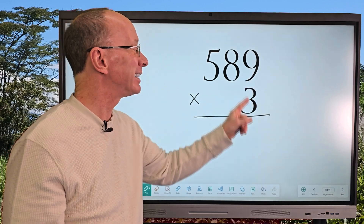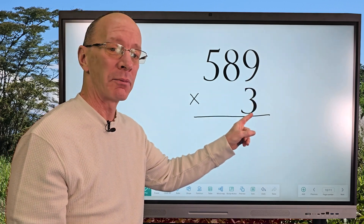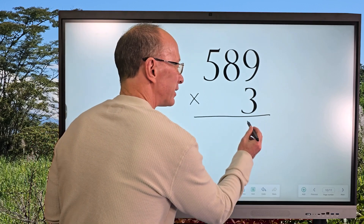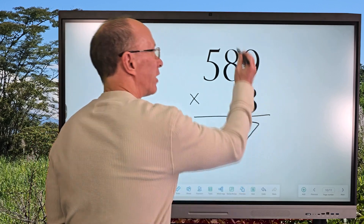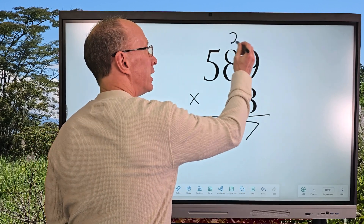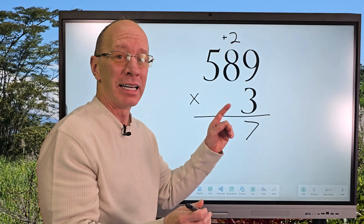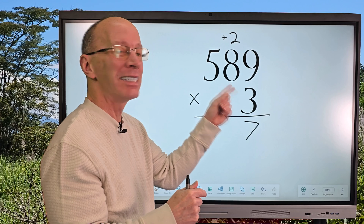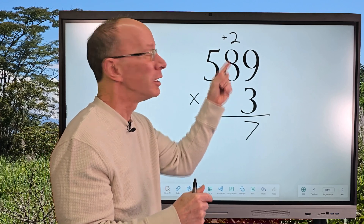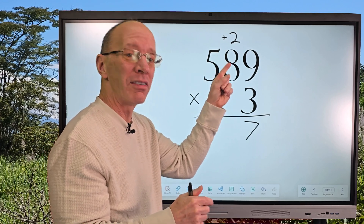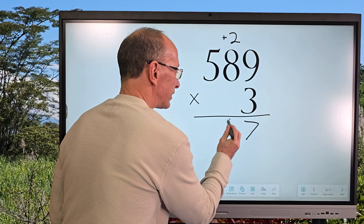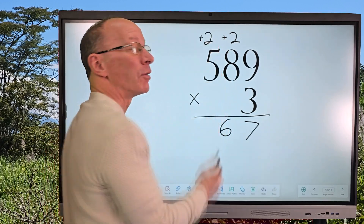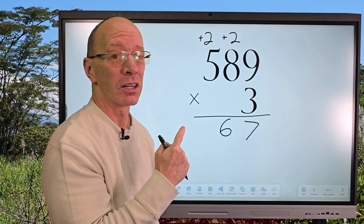Now nine times three — nine times three is twenty-seven — so I'm gonna put the seven right here and carry the two. I'll add that in a little bit, not yet. Now three times eight is twenty-four, plus two more is twenty-six, so I put the six right here and put the two up here. We'll add that in a little bit.